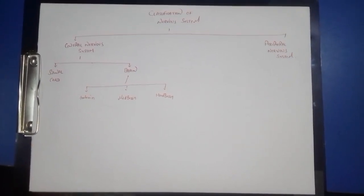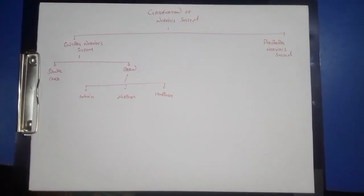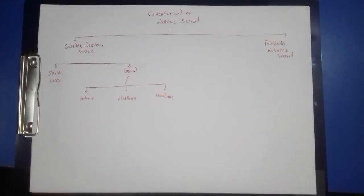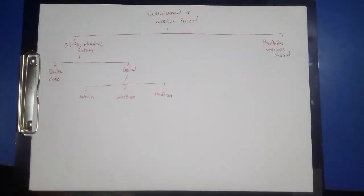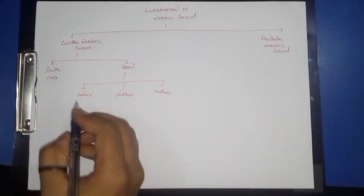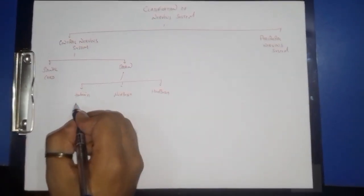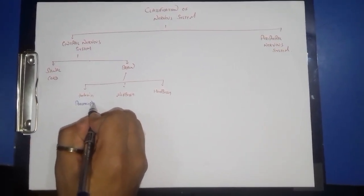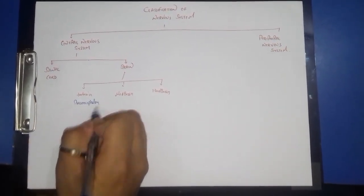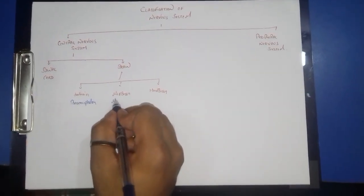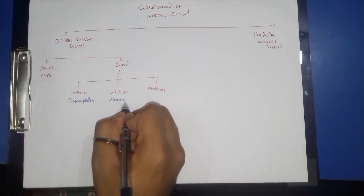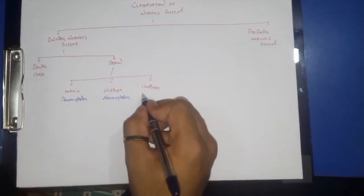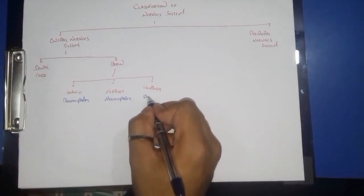Talking about the brain alone, it is divided into three parts: the forebrain, the midbrain, and the hindbrain. Another name of forebrain is prosencephalon, the midbrain is known as the mesencephalon, and the hindbrain is known as the rhombencephalon.